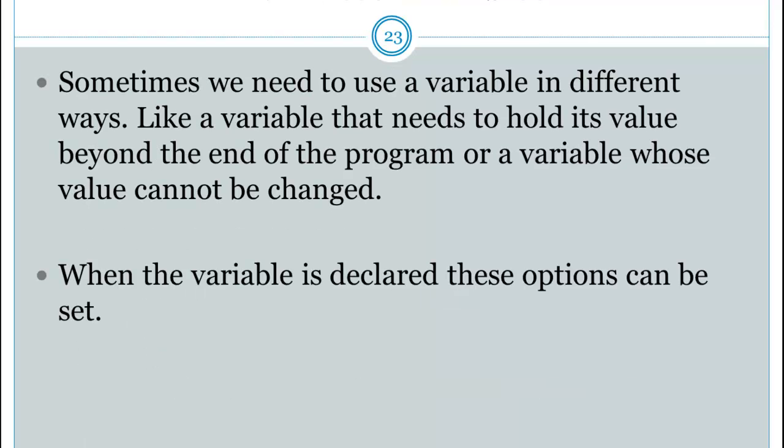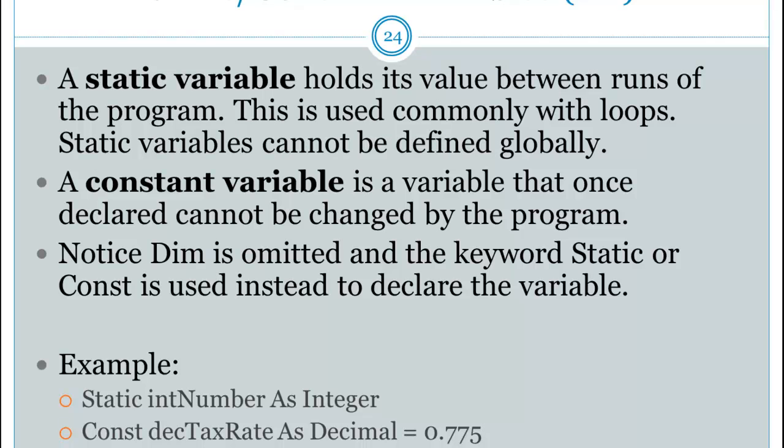So sometimes we need to use a variable in different ways. We want a variable that can hold its value beyond the end of the program. Basically, if I run a block of code, at the end of that block of code, any variables at the end are automatically purged of their data and removed from memory to free up memory. Or maybe I want to use a variable whose value cannot be changed by the program. I declare a value, that value stays. So a static variable is one that holds its value as long as the program is running, not just in between button clicks. So as long as the program is running, that variable holds its data, even if I initiate a button click event multiple times.